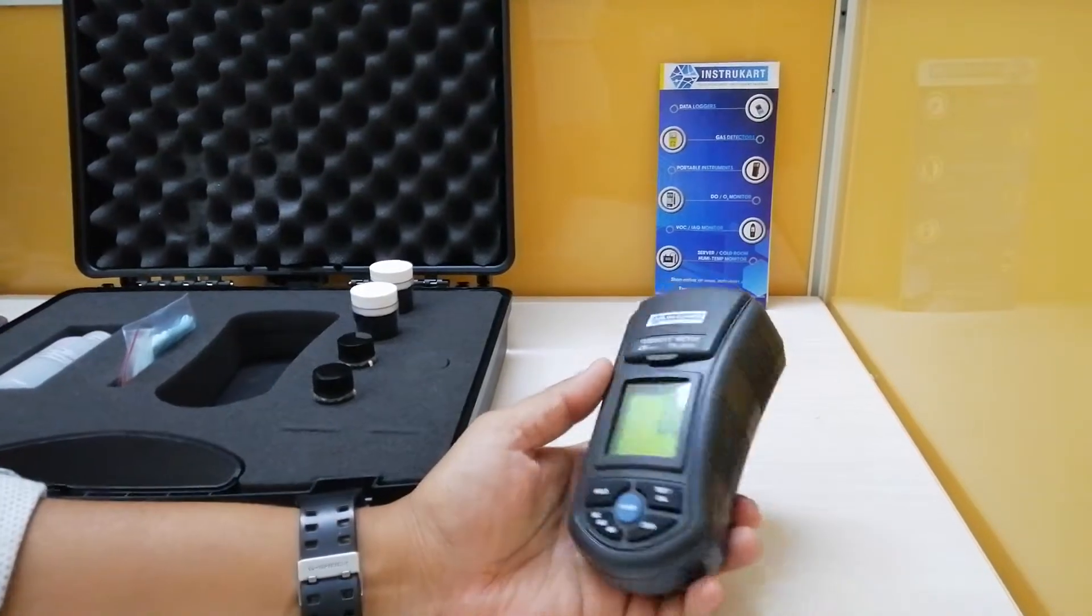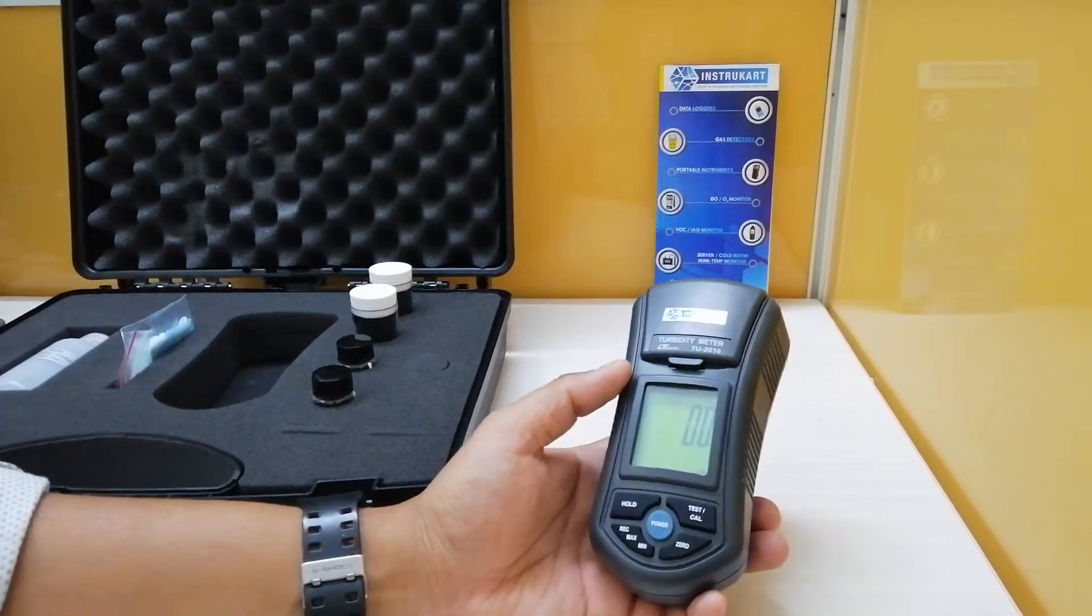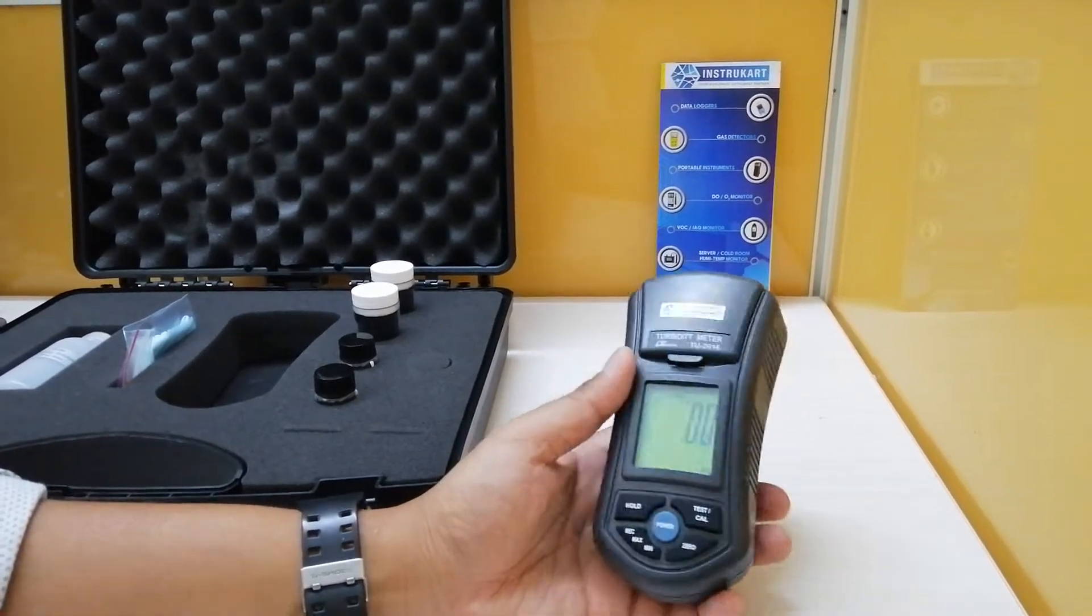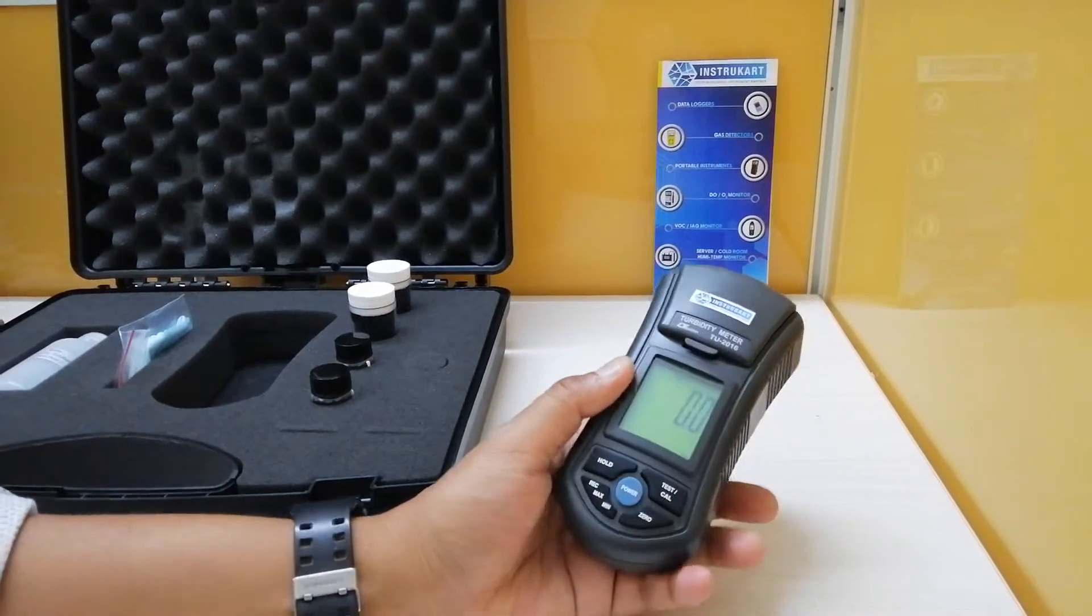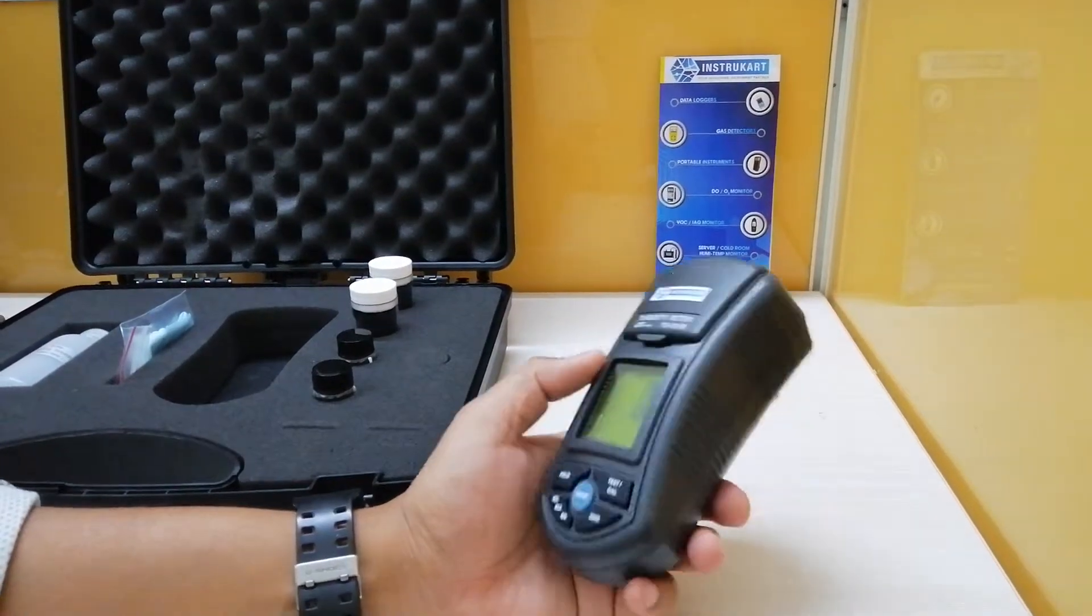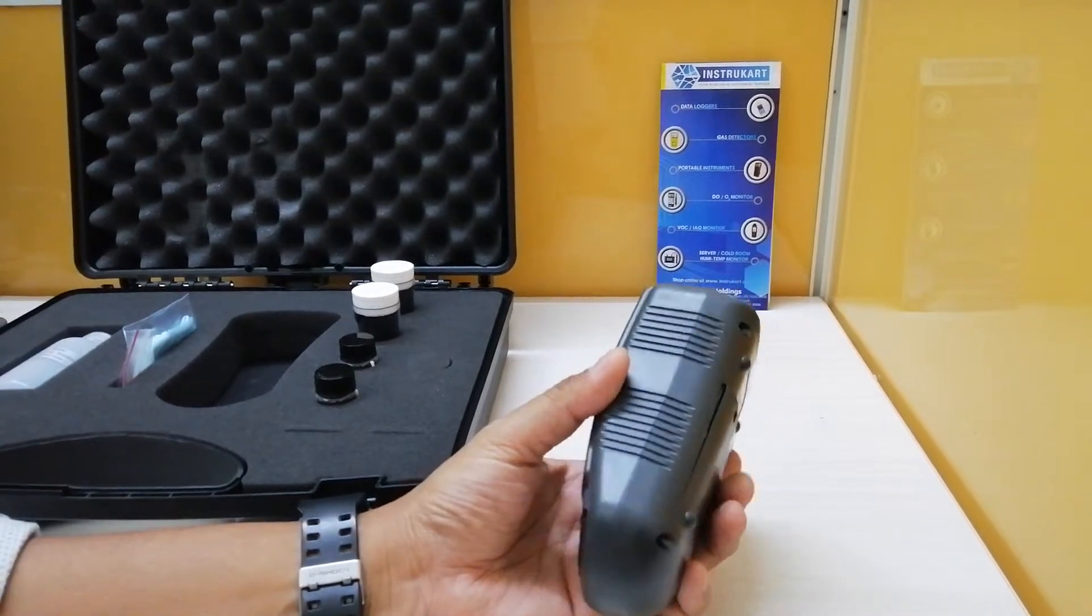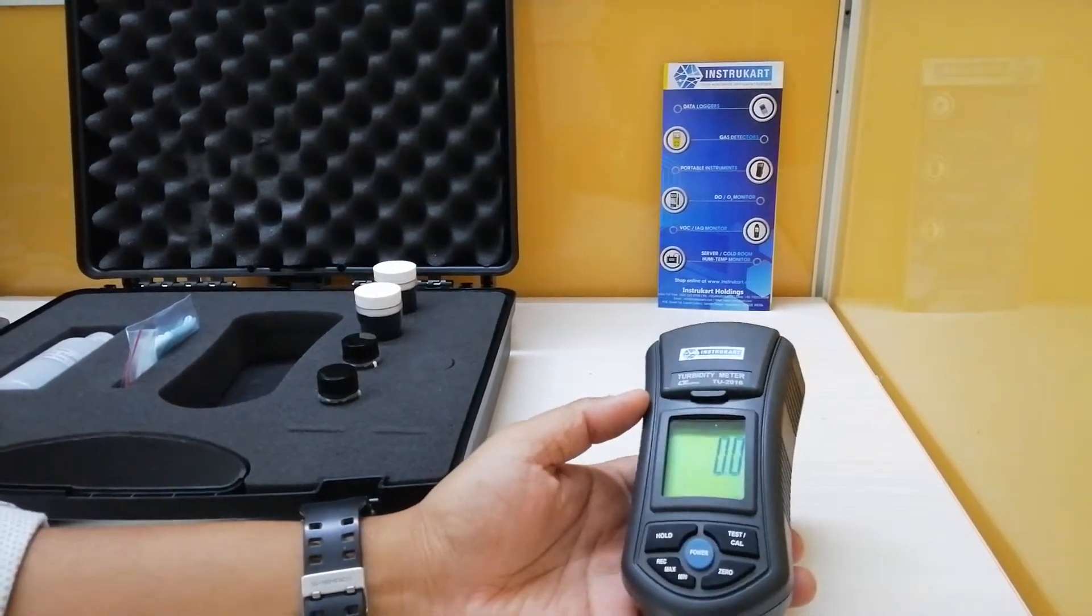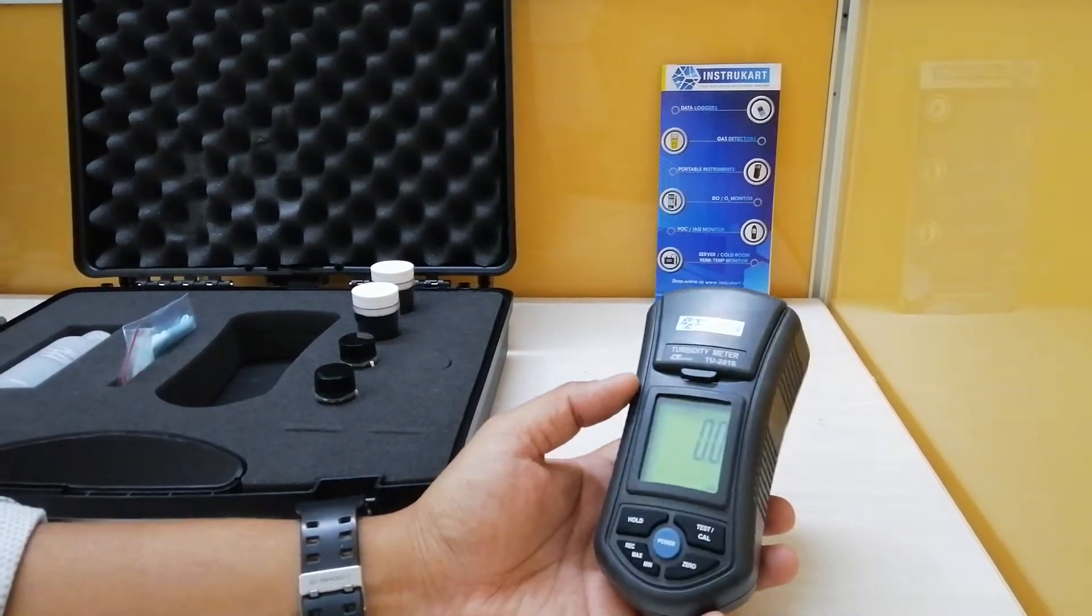Or 0.5 NTU plus or minus, whichever is greater. The light source is LED which is 850 NM and the detector is the photo diode. It meets the standard ISO 7027 for the testing procedure and the response time for this meter is less than 10 seconds.